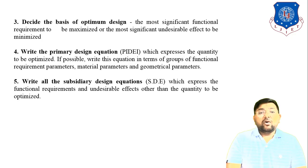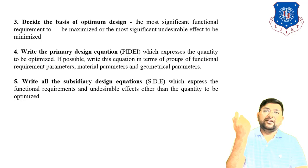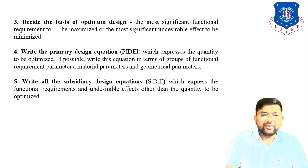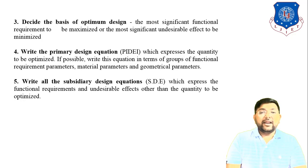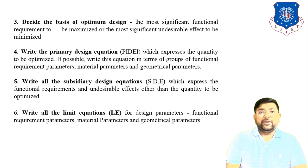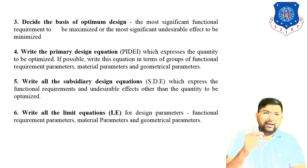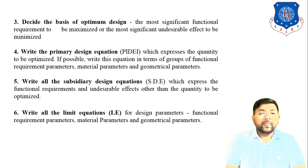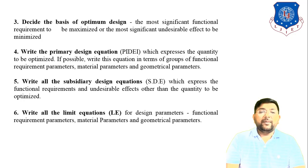Step five: write all the subsidiary design equations. All equations other than the preliminary design equation are subsidiary design equations, which express functional requirements and undesirable effects other than the quantity being optimized. Step six: write all the limit equations — there are three types: primary, subsidiary, and limit equations — covering functional requirement parameter, material parameter, and geometric parameter.